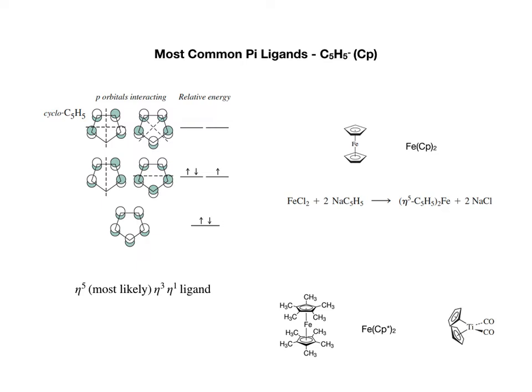Now before we move to the next slide, I'd like you to do a very short exercise. Let's recall the 18 electron rule that we learned in the previous lecture. I'd like you to count the number of electrons in the ferrocene and also in the titanium complex shown on the bottom right, and think about how the 18 electron rule can explain the different coordination geometry of the two complexes. Please pause the video and spend a minute or two to run the numbers, and when you're done, resume the video.